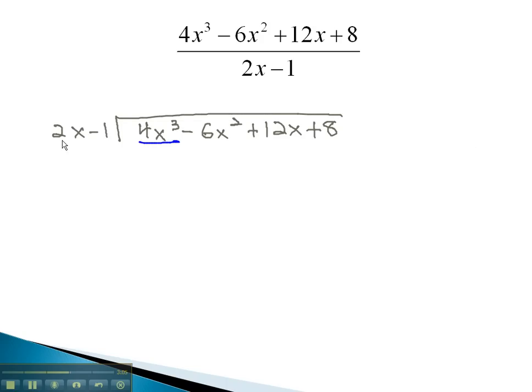Again, we divide the front terms, 4x cubed by 2x, to get 2x squared.